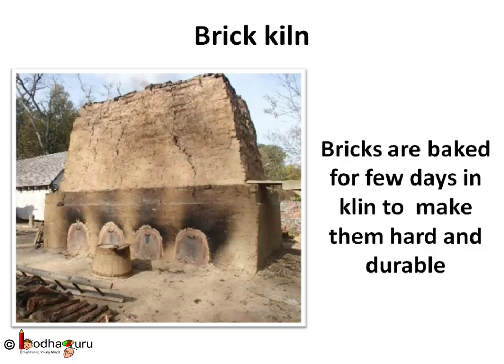The spaces between bricks are filled with wood, charcoal, husk, etc., and the whole block of bricks is covered with clay. This arrangement is called a brick kiln. Fuels are lighted and bricks are baked for a few days to make them hard and strong. The tiles are also baked in a kiln like this.